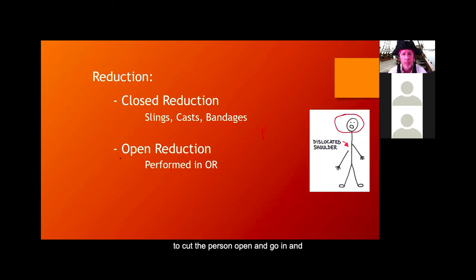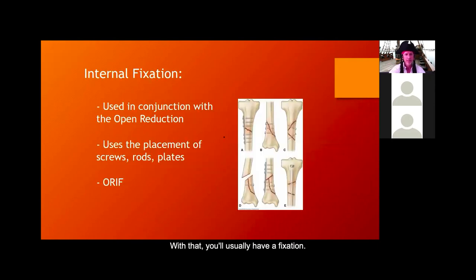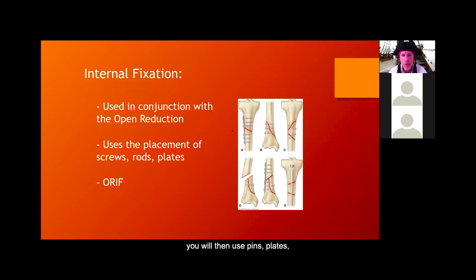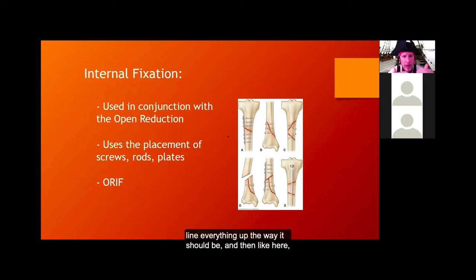Open reduction is when you actually cut the person open and manually align the bone — necessary for crush fractures where you can't just pop everything back into place. With open reduction, you usually also have a fixation: once everything is aligned, the surgeon uses pins, plates, wire wraps, or rods to keep everything in place. The surgeon removes old bone spurs, tissue, and debris, aligns everything, then screws a plate into the bone or runs a rod down through the entire bone.